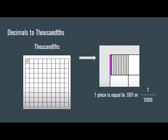Thousandths can be described as a whole number divided into 1000 pieces or each hundredth divided into 10 pieces. Each piece having a decimal value of 0.001 or the fraction value of 1 over 1000.